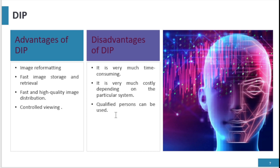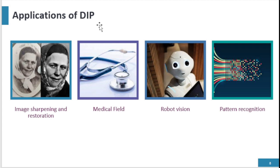Applications of DIP: DIP systems are used in many fields nowadays. Image sharpening and restoration — you can change the look and feel of an image, blur, edit, or sharpen it. In the medical field, image processing systems are used for X-rays, CT scans, and many reports. In robotics, DIP systems are used to find a robot's way and path, like line-following robots. Pattern recognition systems also use DIP to recognize patterns.